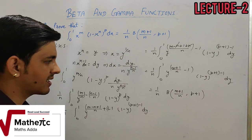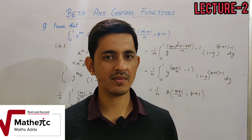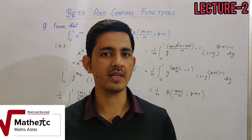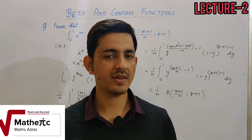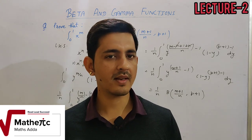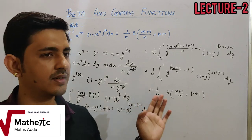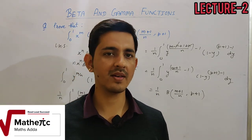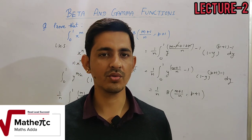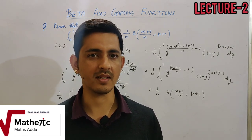So in today's questions, I showed you how any integration with limits 0 to 1 can be converted into a beta function. So far we have done the definition, properties, and conversion numericals of beta function. In the upcoming videos, we will also find the numerical answers — that is, once an integration is converted to beta function form, how to evaluate it without direct integration.